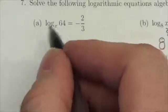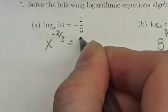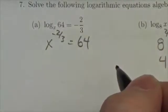But they've done a lot of that work for us. They've already isolated this, so I'm just going to convert this to the exponential form. So this will be x to the negative two-thirds is equal to 64.